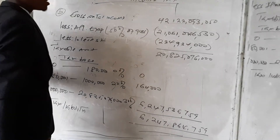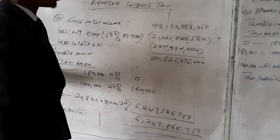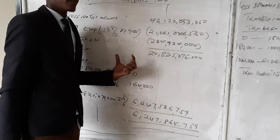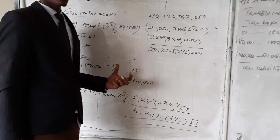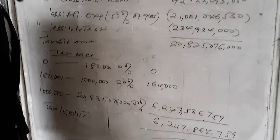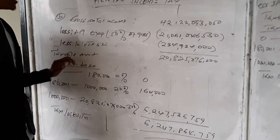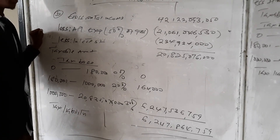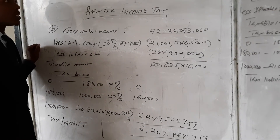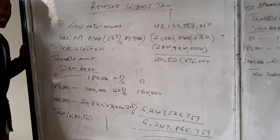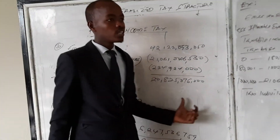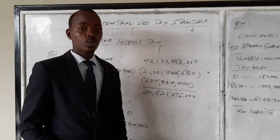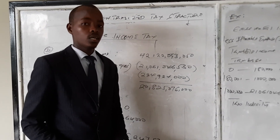This is the end of the question sent among the revision questions. This marks the end of decentralized tax structure, which was chapter 2. After this, we are going to look at chapter 3, which is personal income tax. Thank you so much — this is the end of our second presentation.